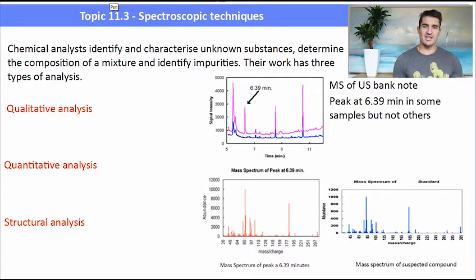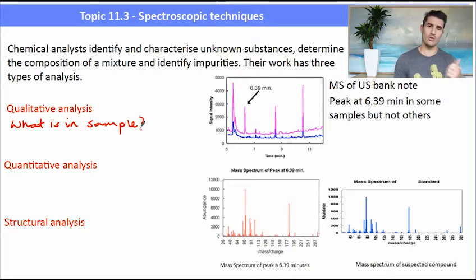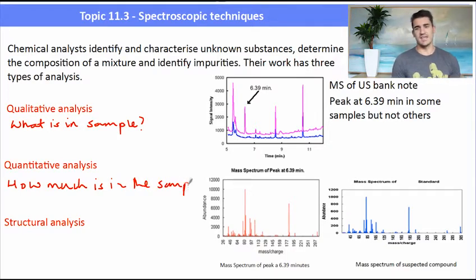Chemical analysts have been identifying and characterizing unknown substances using instruments for a number of years. They ask themselves what is in the sample - the qualitative analysis. They ask themselves how much of that particular compound is present in the sample - that's the quantitative analysis. Other techniques are interested in the structural analysis. That means we're looking at the location of functional groups in a molecule or the presence of different types of bonds in a molecule.